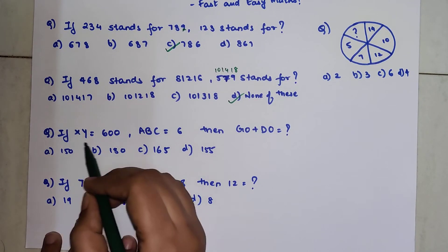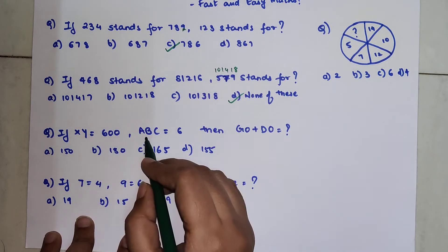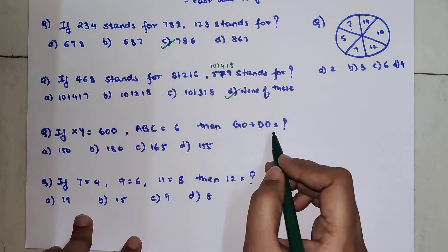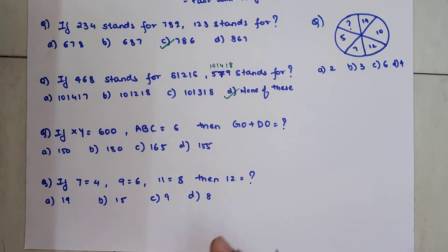So the next question is if XY is 600 and ABC is 6 then what is GO plus DO? Now understand students when it comes to alphabets with numbers there are very few basic rules which you need to know. Like you know A will stand for number 1, Z will stand for number 26. So there are few basic rules and if you want to have a clear understanding then the link of that kind of a video which I have already made will be available somewhere on the top as well as in the description. Please go ahead and check it out because that is like super simple. Once you know these basic ground rules you will be able to solve any of the alphanumeric questions in matter of seconds.